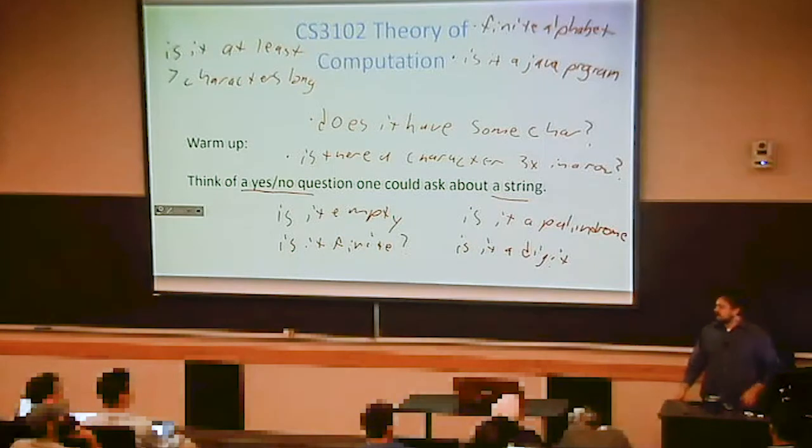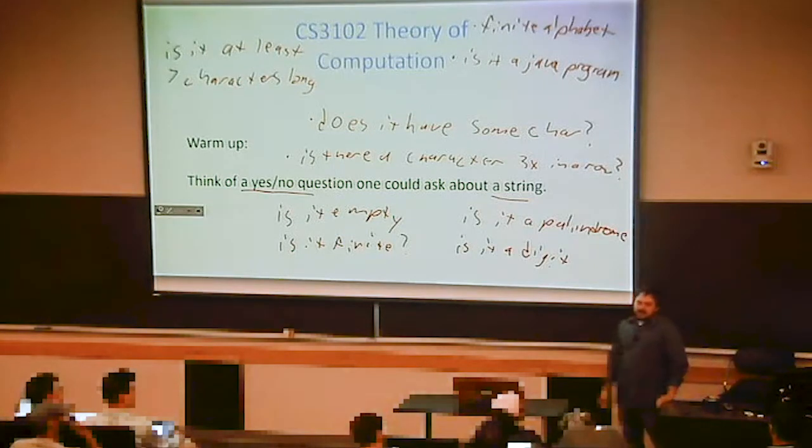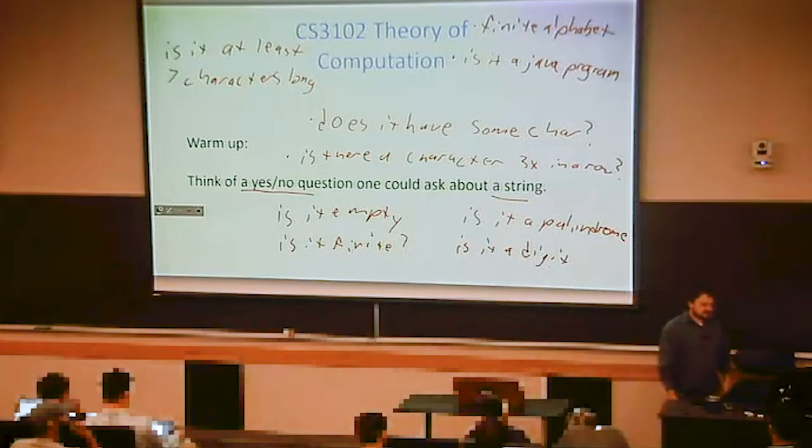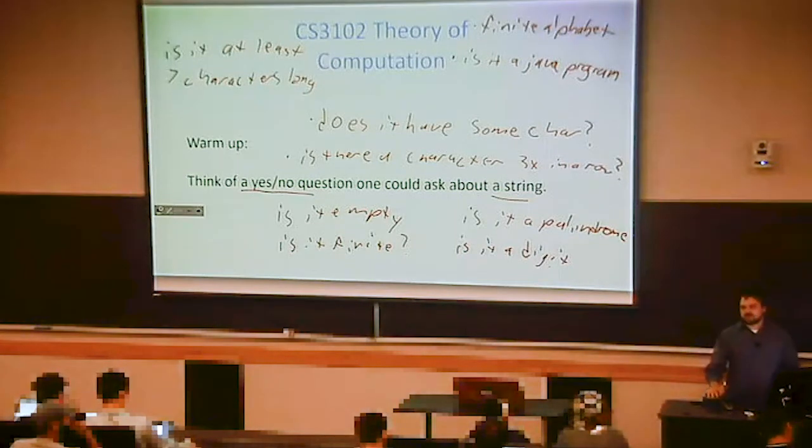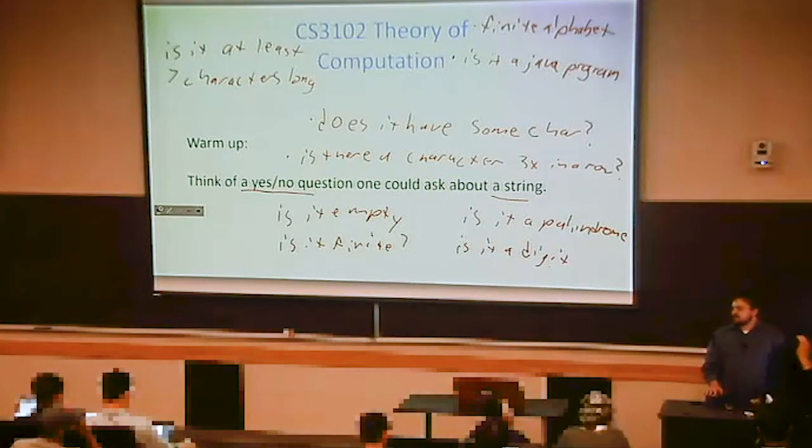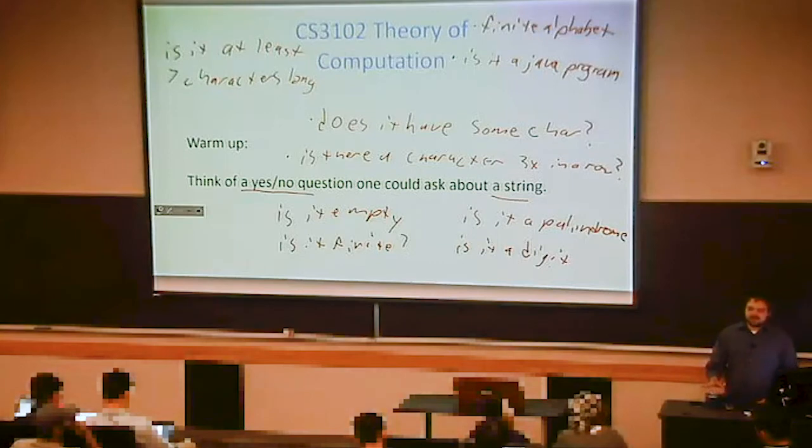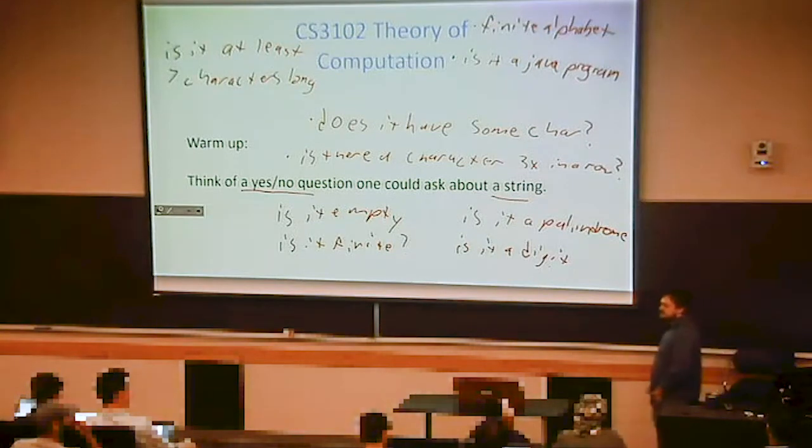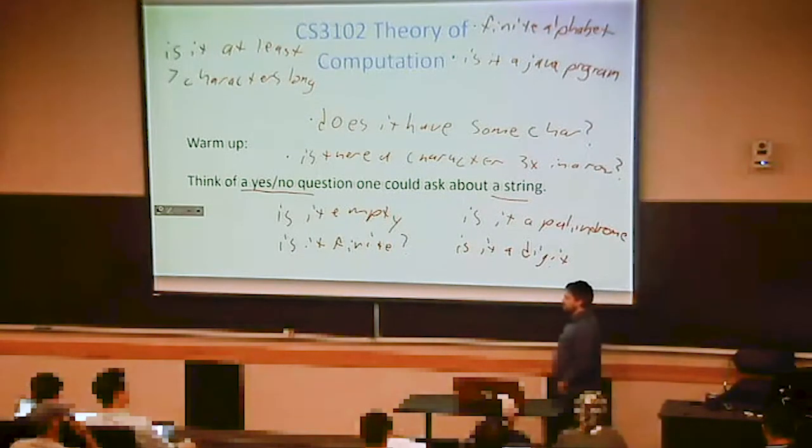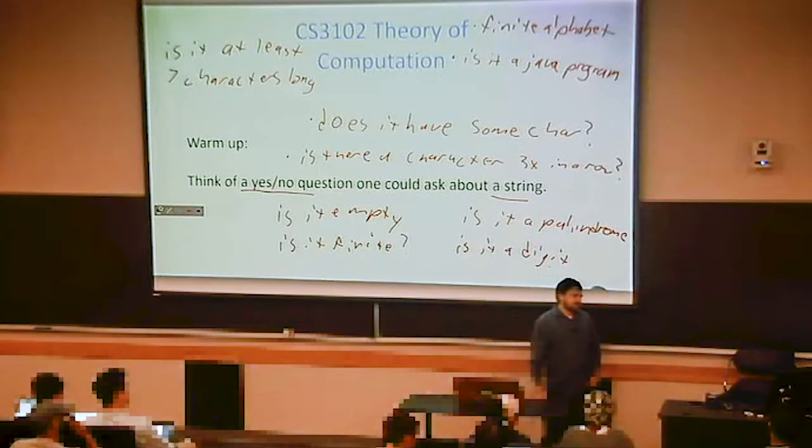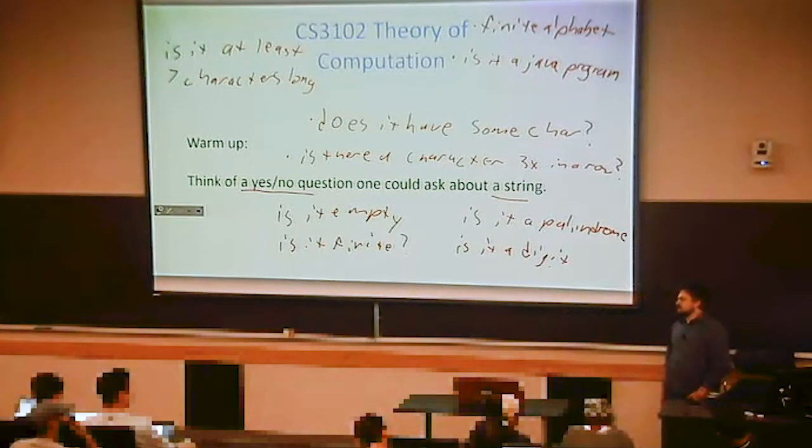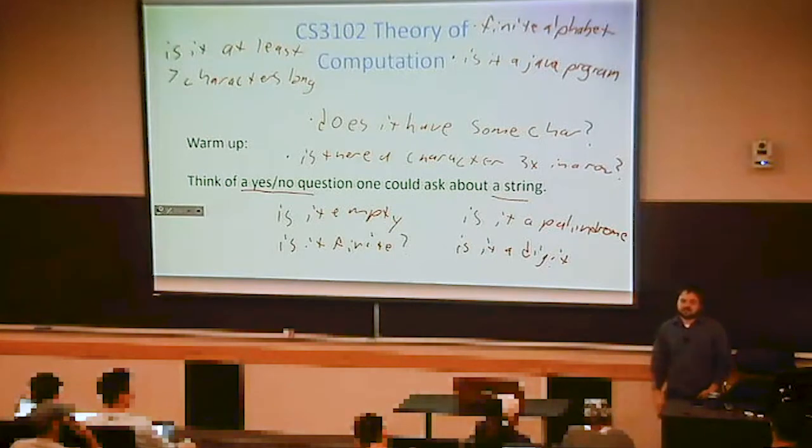Yeah, a compiler or interpreter is the program that answers this question: is it a Java program? When you compile Java, the first thing it does is say, wait, was that even Java you handed me? If it didn't look like Java, it says no, that's not valid Java. If it did look like Java, then it does other stuff with it after that.